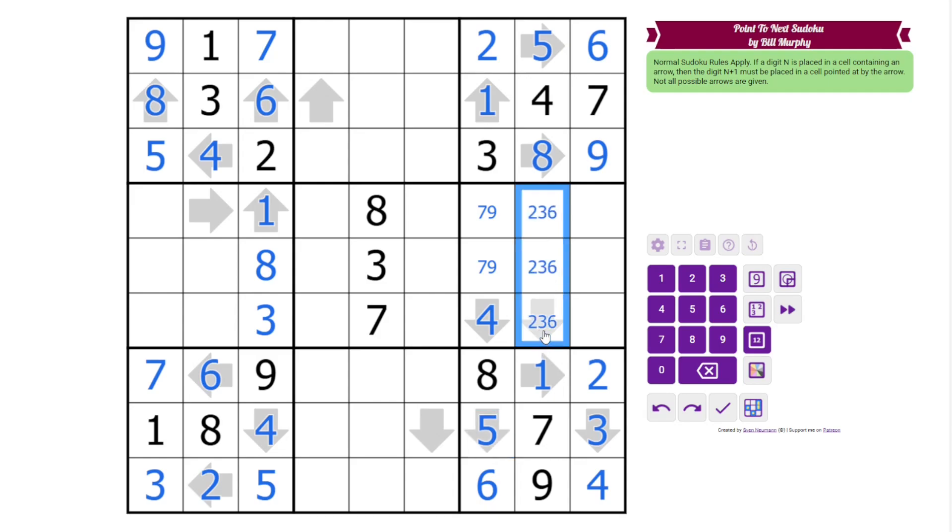These are 2, 3, 6. And the only one with the next digit is the 7 here. So that's 6, 2, 3 by this 3. And then these are 1, 5, 8, and they are resolved by the digits we've already placed over here.